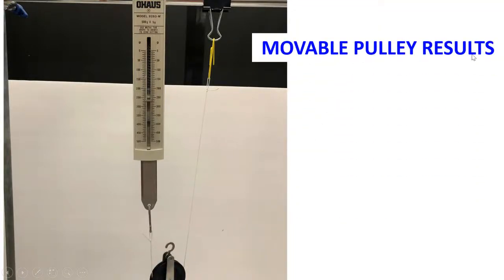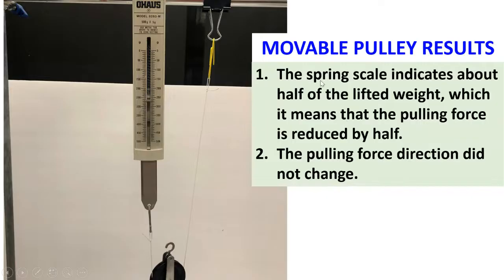Movable pulley results: the spring scale indicates half of the lifted weight, which means that the pulling force is reduced by half. The pulling force direction did not change.